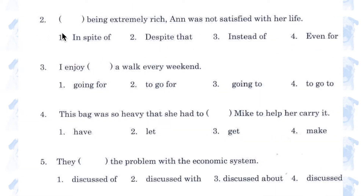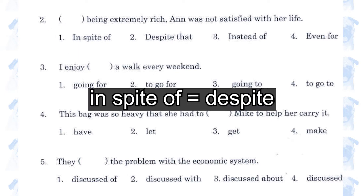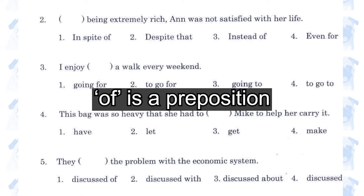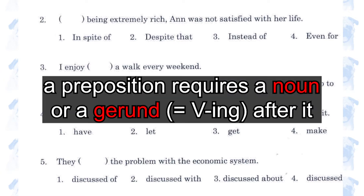Number 2. 'In spite of / despite that / instead of / even for being extremely rich, Anne was not satisfied with her life.' Number 1, in spite of. The phrase 'in spite of' is synonymous with the preposition 'despite', and because 'in spite of' ends in the preposition 'of', it requires that the following word be either a noun or a gerund, like in this case, 'being'.